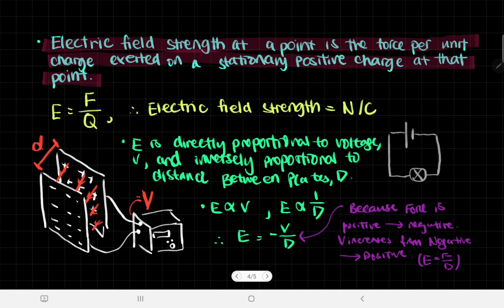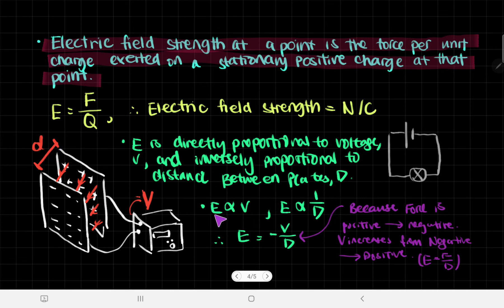There's an alternate way of calculating electric field strength. E is directly proportional to voltage — the higher the voltage, the bigger the potential difference between the plates, and therefore the higher the electric field strength. It is inversely proportional to the distance D between the plates, just like gravitational force decreasing with distance. Therefore, we get the equation: E equals voltage divided by the distance between the plates.